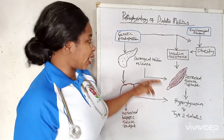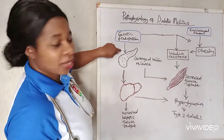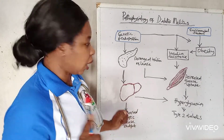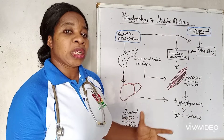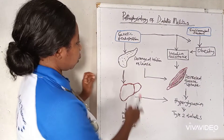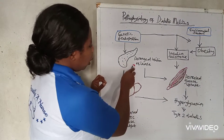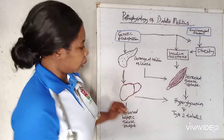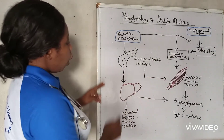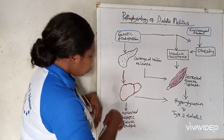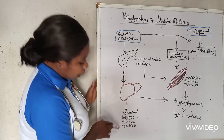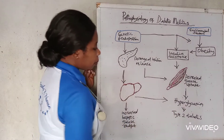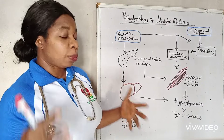Another factor is genetic predisposition — diabetes runs in the family. If you have uncles, aunties, fathers, or grandparents with diabetes, you are more likely to have it. This affects the pancreas, the organ located behind the stomach that secretes insulin. Insulin breaks down the carbohydrates we eat into simple sugar so that the cells can use it. When there is little insulin, or the cells cannot recognize insulin, the liver recognizes this and secretes more glucose into the body, and this increased hepatic glucose output leads to hyperglycemia.